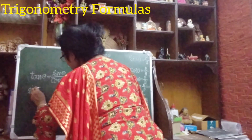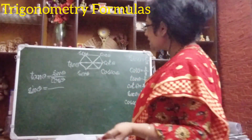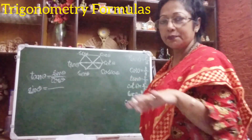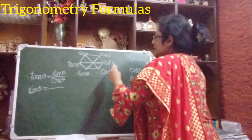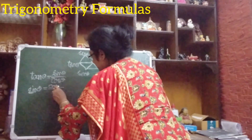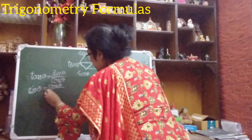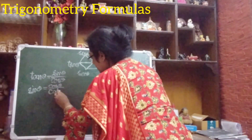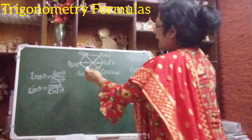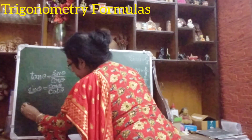Now one more — let us write the identity for sin theta. Using the same trick, look at the next two clockwise from sin theta: cos theta and cot theta. So: sin theta equals cos theta divided by cot theta.